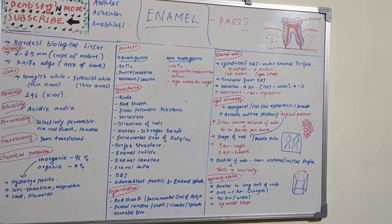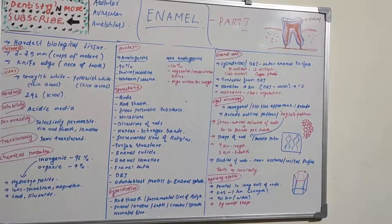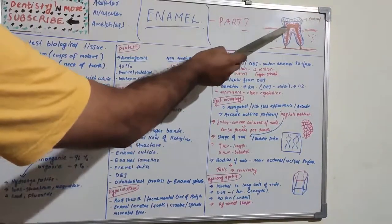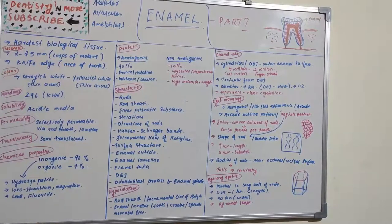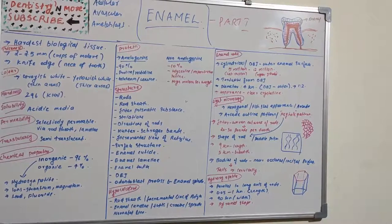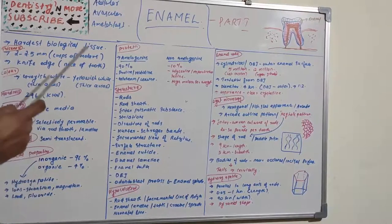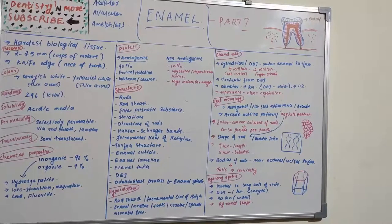Enamel is the hardest biological tissue. It attains maximum thickness of around 2 to 2.5 millimeters on the cusps of molars and premolars. Minimum thickness is near the neck of the tooth — a knife-edge thickness around the cervical region. Maximum cusp thickness is seen at the cusps of molars and premolars.